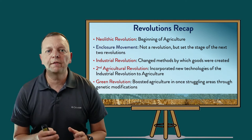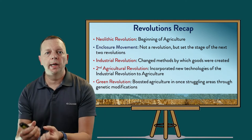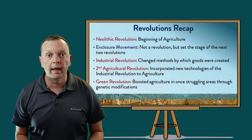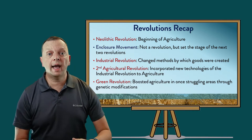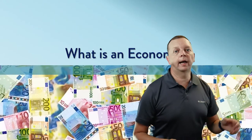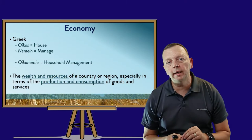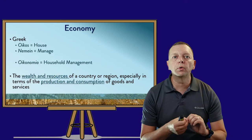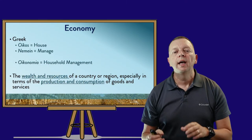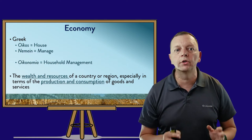In each of these, we found better and better ways to be able to get food, and then to be able to produce products. And this meant we had a great deal of trade and an economy. And what is an economy? Well, an economy is the wealth and resources of a country or region, especially in terms of production and consumption.